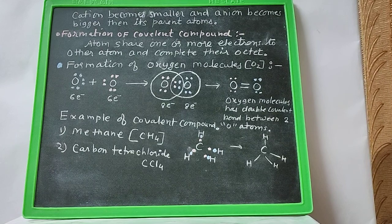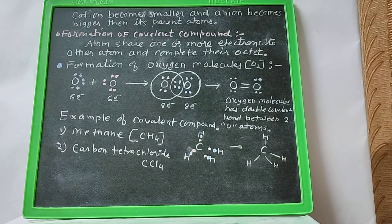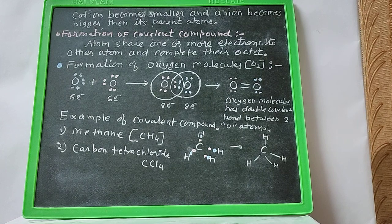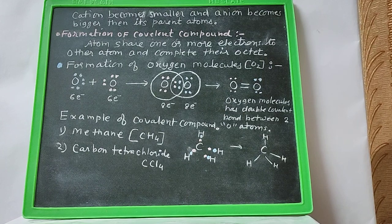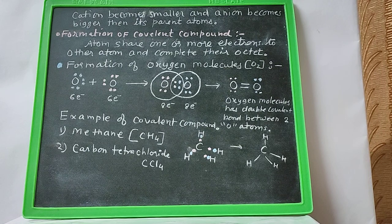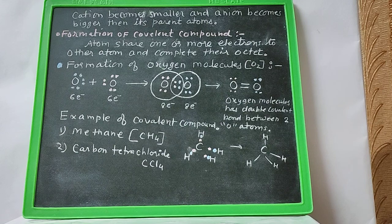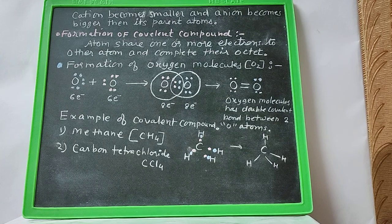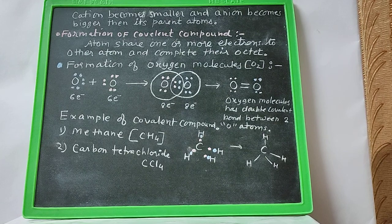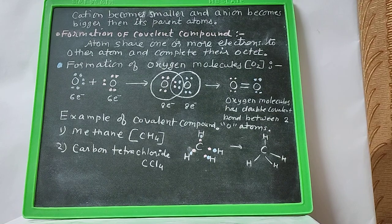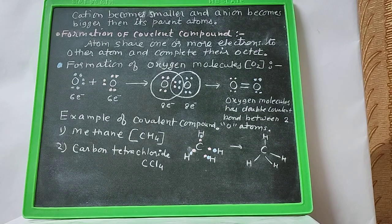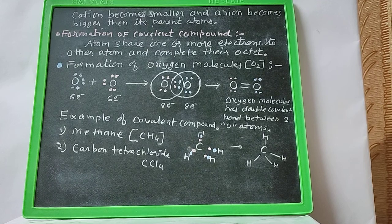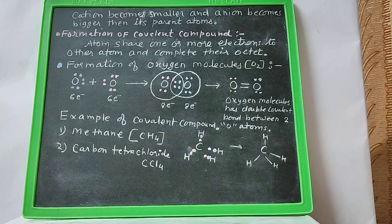In the formation of a covalent bond, atoms share one or more electrons with other atoms to complete their octet. We can understand covalent bonding with the example of oxygen molecules: each oxygen atom shares two electrons with the other oxygen atom, forming an oxygen molecule. Therefore, the oxygen molecule has a double bond between the two oxygen atoms. Other examples of covalent compounds are methane and carbon tetrachloride.